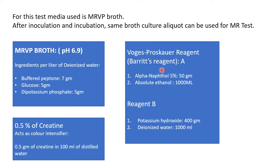The Voges-Proskauer reagent, also known as Barritt's reagent, has two parts: Part A contains 5% alpha-naphthol in absolute ethanol, and Part B contains potassium hydroxide, the strong alkali. To intensify the color, some institutes add 0.5% creatine solution. Creatine acts as a color intensifier and is prepared by dissolving 0.5 grams of creatine in 100 ml of distilled water.